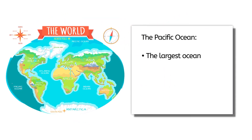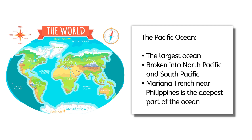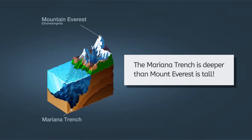The largest ocean by far is the Pacific Ocean. In fact, it is so large that it is often broken down into the North Pacific and South Pacific Oceans. The Pacific Ocean also has the deepest region, the Mariana Trench. The Mariana Trench is located near the Philippines, and is deeper than Mount Everest is tall.